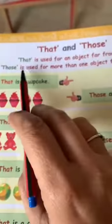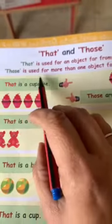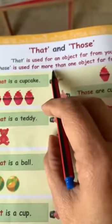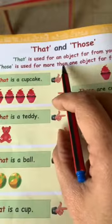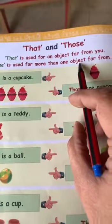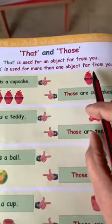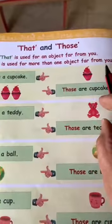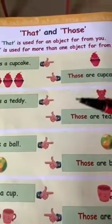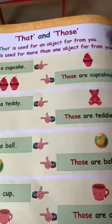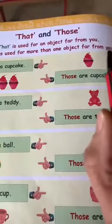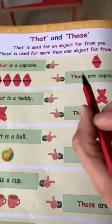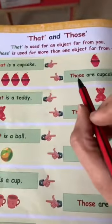Those is used for more than one object far from you. Jo cheezayn hum se door hoti hain, us ke liye hum use kerti hain word those.